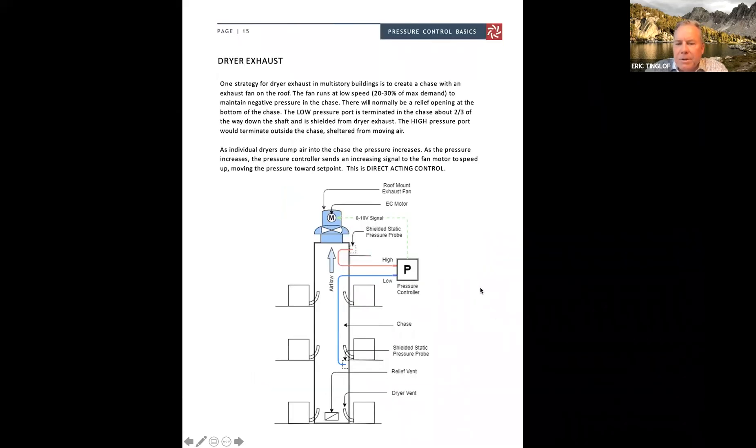Dryer exhaust in multi-story buildings in a lot of markets these days for condominiums, apartments, hotels. You have a common chase, multiple floors, dryer exhaust from each unit pushing that air into a negatively pressurized chase. So one fan up on the top of the chase, and then you have your low pressure about two thirds of the way down the chase to pick up the static pressure. And then on the high side, you have this to atmosphere on the outside of the chase. As the pressure goes up in this chase because you have more units coming on, that will send a signal back to the pressure controller to the EC motor to speed up. So that becomes now a direct acting scenario.